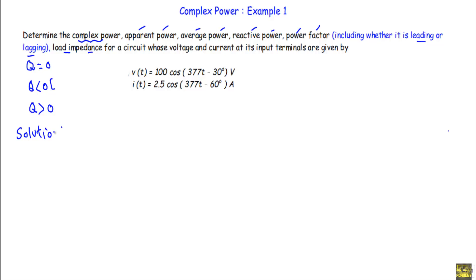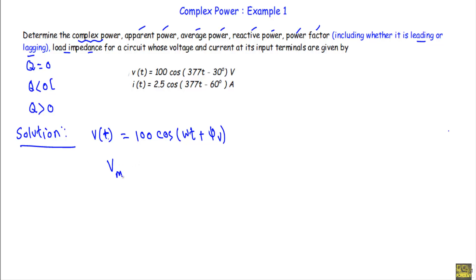Here we have v(t) = 100 cos(377t − 30°) volts. Comparing this with the standard sinusoidal voltage equation v(t) = Vm cos(ωt + φv), I get: Vm = 100 volts, angular frequency ω = 377 radians per second, and the phase angle of voltage φv = −30 degrees.